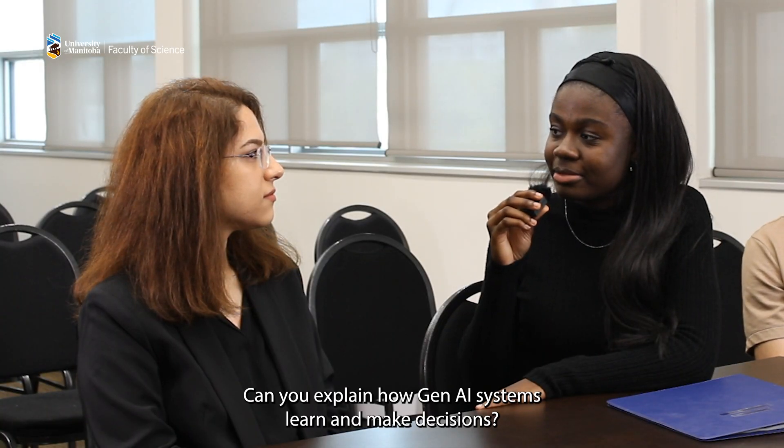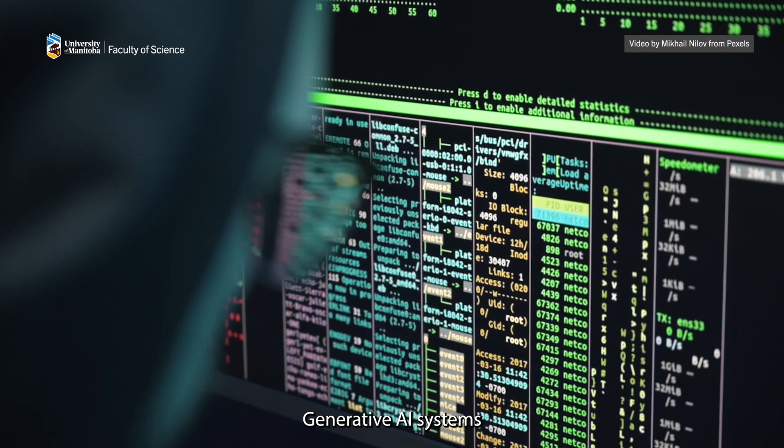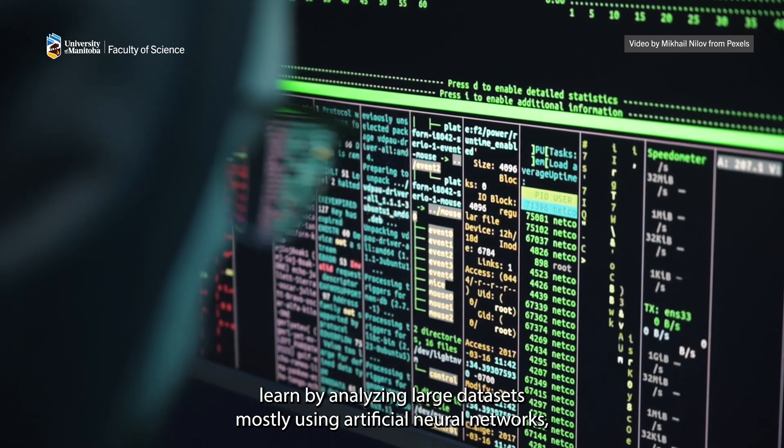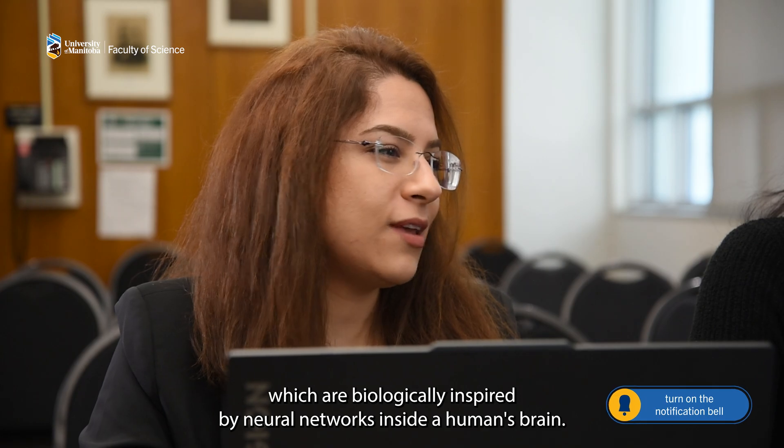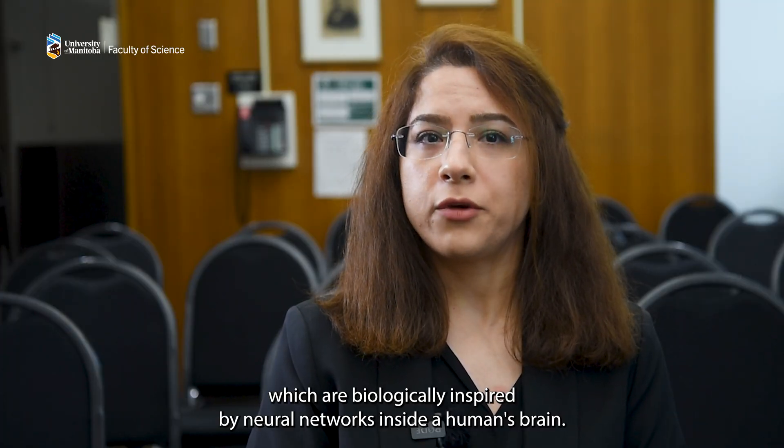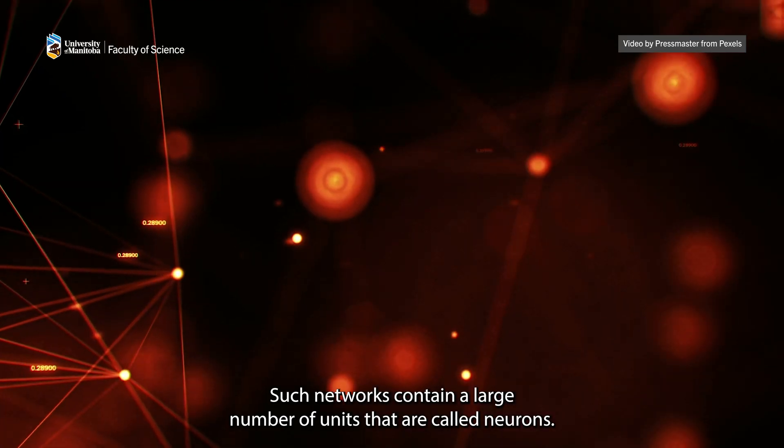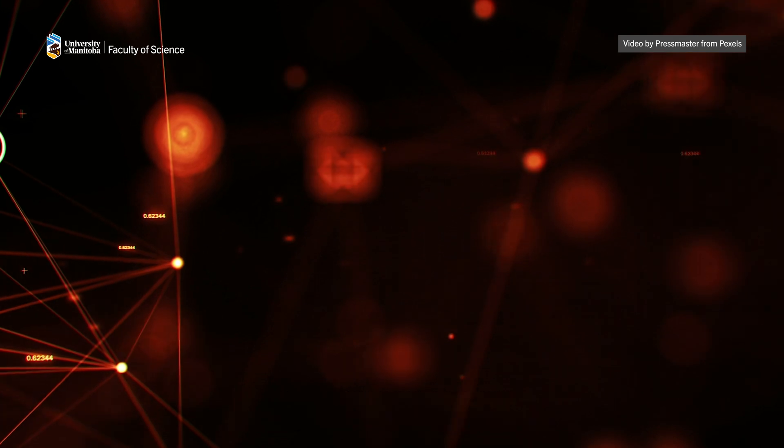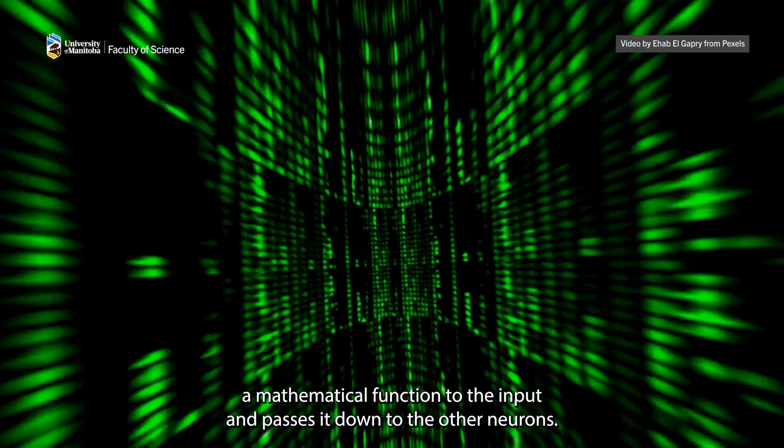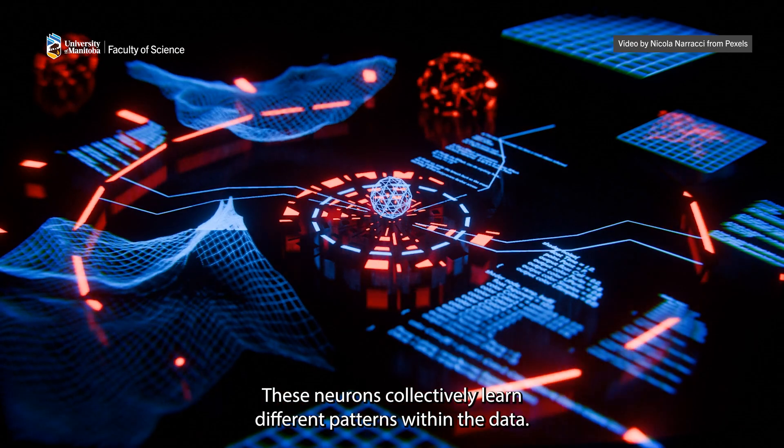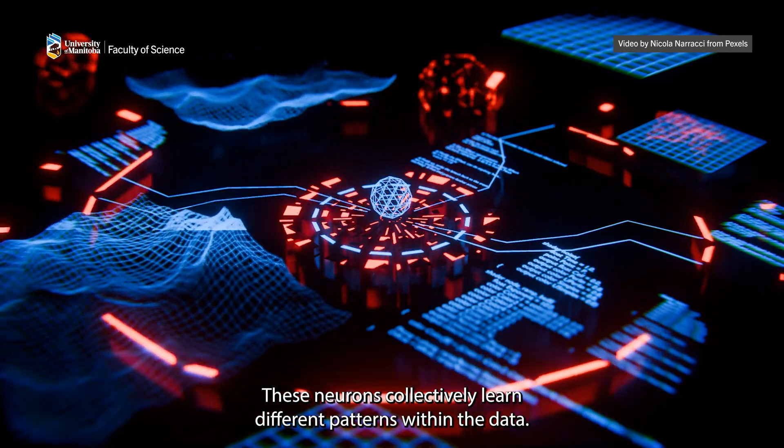Can you explain how Gen AI systems learn and make decisions? Generative AI systems learn by analyzing large datasets mostly using artificial neural networks which are biologically inspired by neural networks inside the human's brain. Such networks contain a large number of units that are called neurons. Each of these neurons applies a mathematical function to the input and passes it down to the other neurons. These neurons collectively learn different patterns within the data.